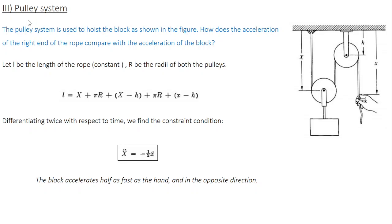Moving on to another practical system: a two-pulley system. There are two pulleys and a rope going through them; an object is attached to the second pulley. One end of the rope is tied and the other end is loose. When you pull the rope downwards, the object raises upwards. The pulley system is used to hoist the block. How does the acceleration of the right end of the rope (your hand) compare with the acceleration of the block? Which parameter is constrained? Obviously, the length of the rope remains constant throughout the motion, so we write the constraint equation with respect to length.